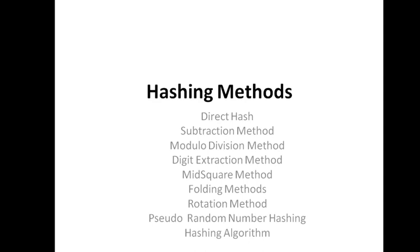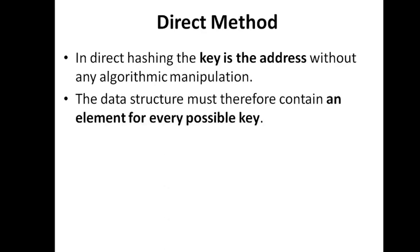Now we discuss the actual hash algorithms. The first is the direct method — the simplest approach, where you use the key itself as the address, without any hash function. For example, to store key 5 into the list, use address 5. To store key 1000, use address 1000. The key and address are the same, with no function needed to predict the address.